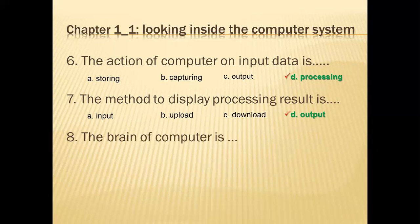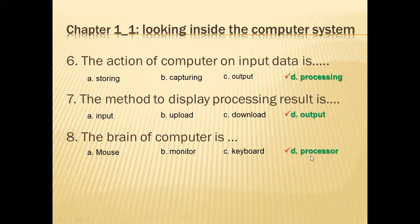The brain of the computer: which component of the computer is the brain? The right answer is the processor or CPU. The processor is the overall controlling component. Data is processed by the processor, and output results or information can be made. The component that processes data is the processor or CPU.